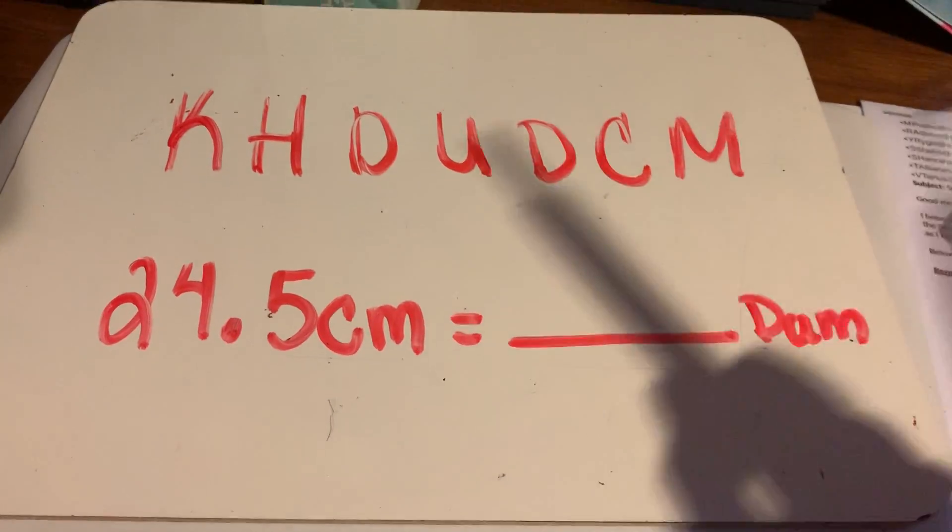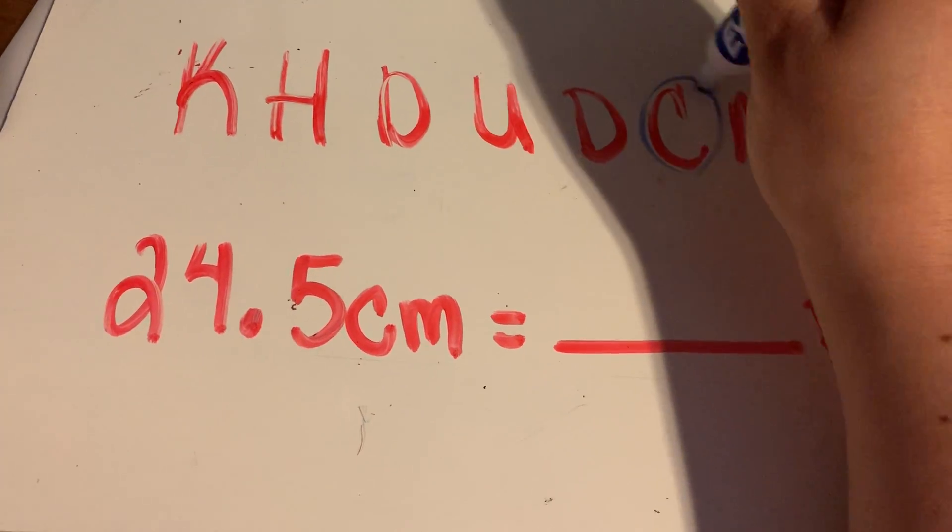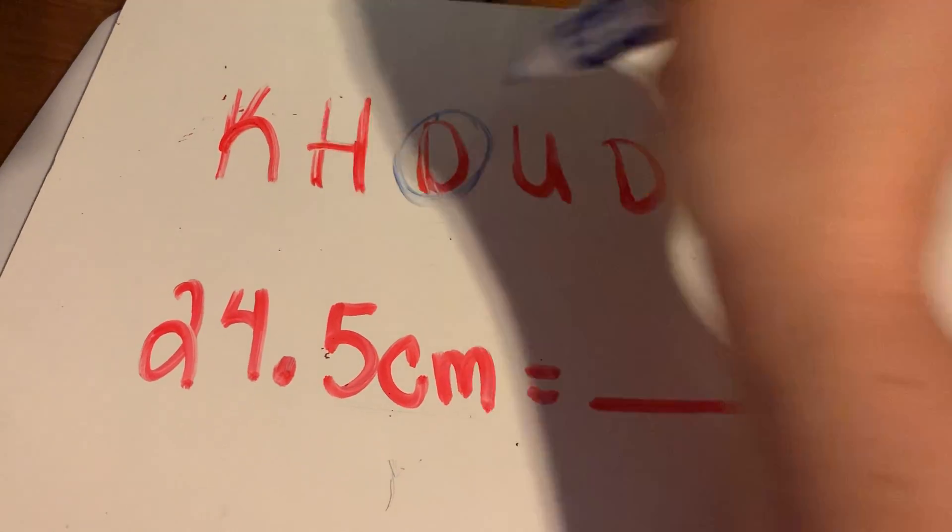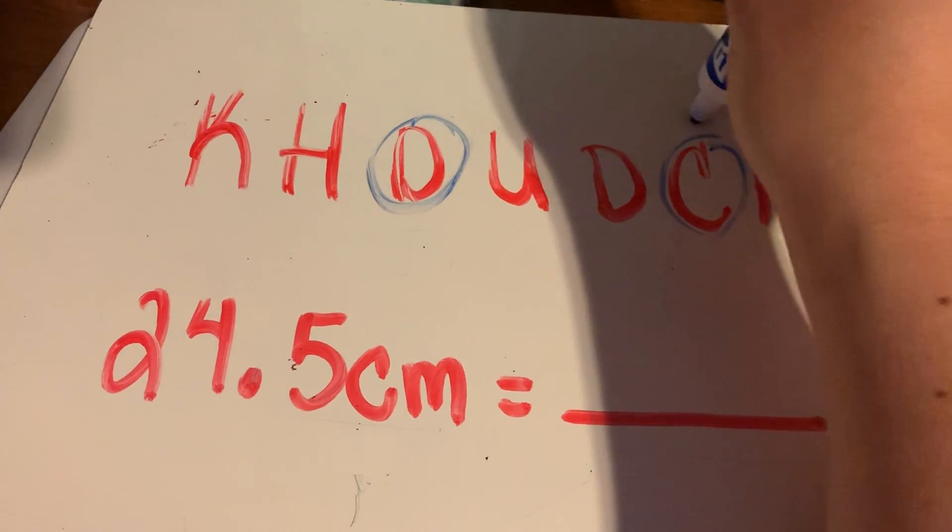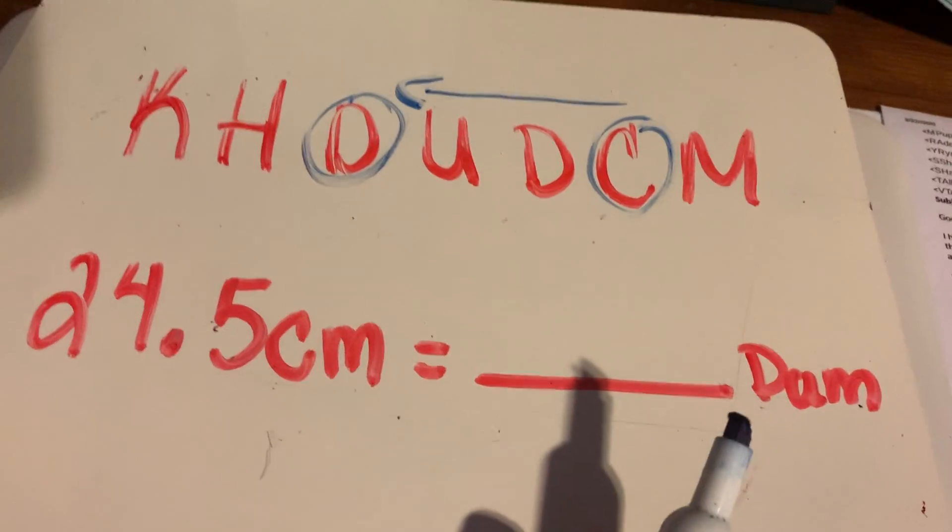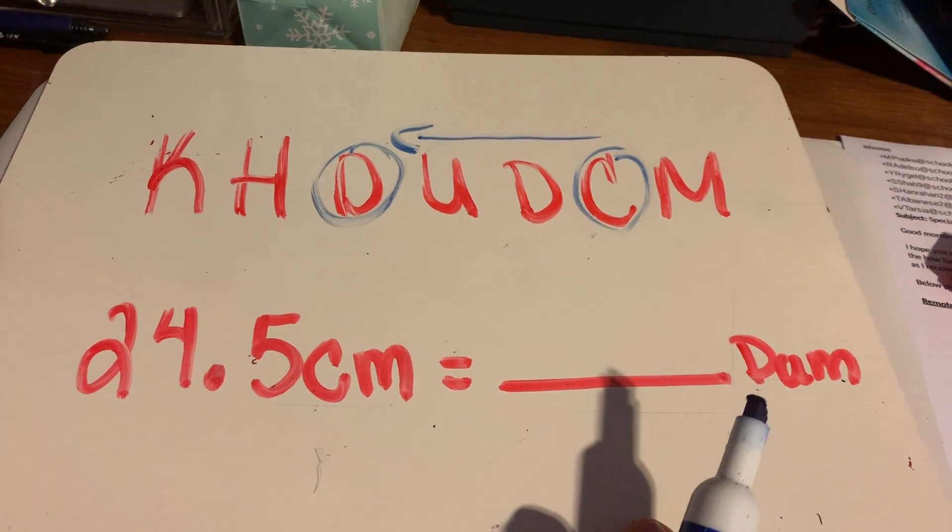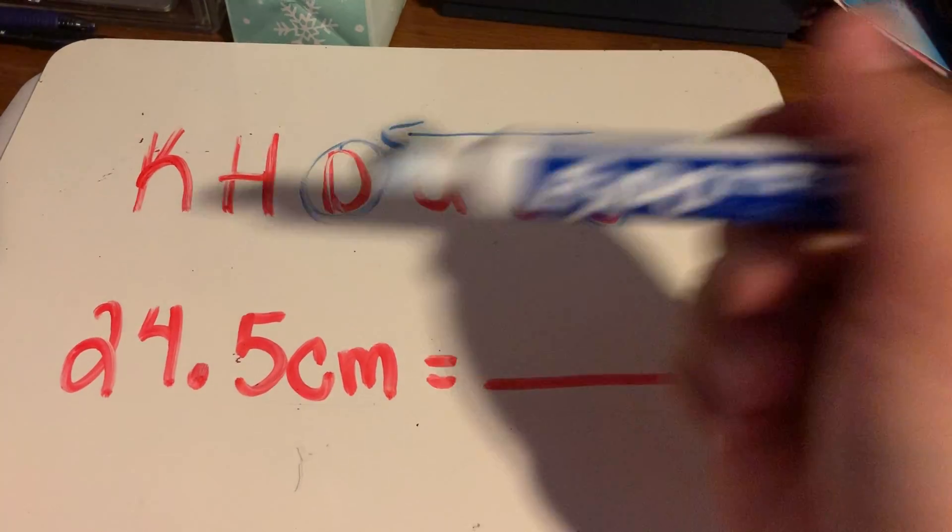All right. So where am I starting? I'm starting from centimeters. And where am I going? I'm going to decameters. So which direction am I moving now? I'm moving to the left. So that's going to tell me which direction I'm going to have to move my decimal. Which direction am I moving my decimal? To the left.